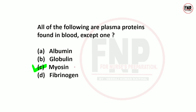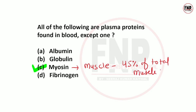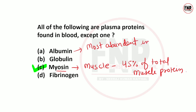The right answer is option C — myosin. Myosin protein is found in muscles and constitutes 45% of total muscle protein; it is the most abundant protein in muscles. The most abundant protein in blood plasma is albumin. Myosin is not a plasma protein.